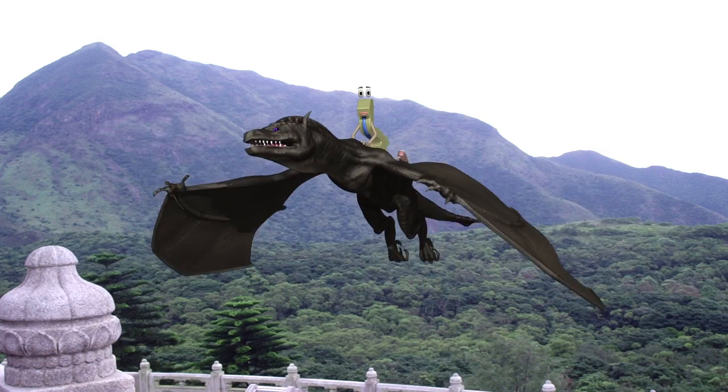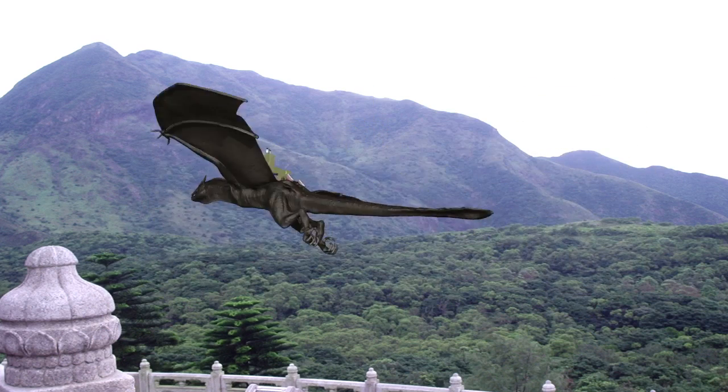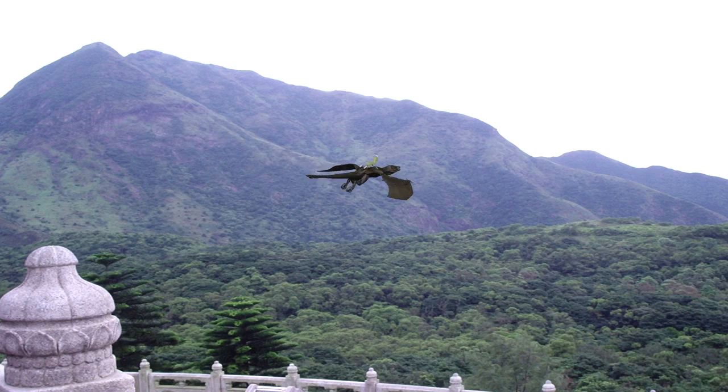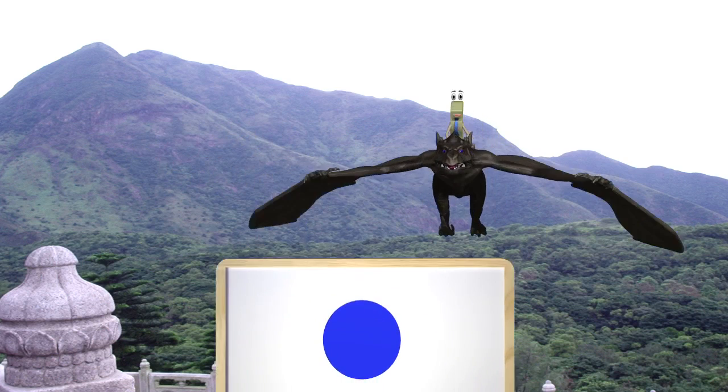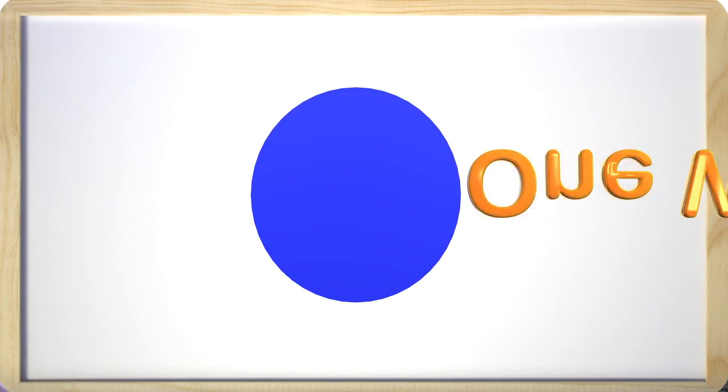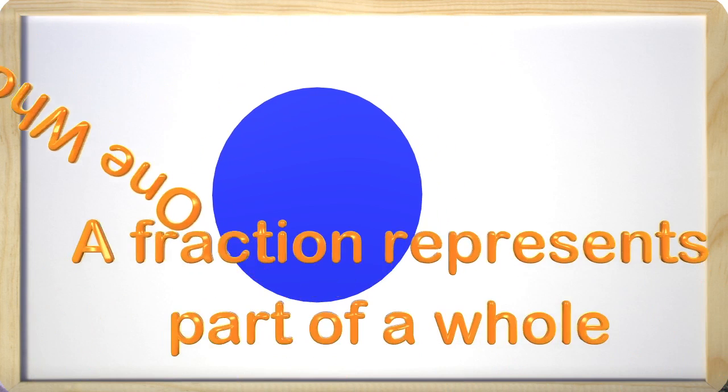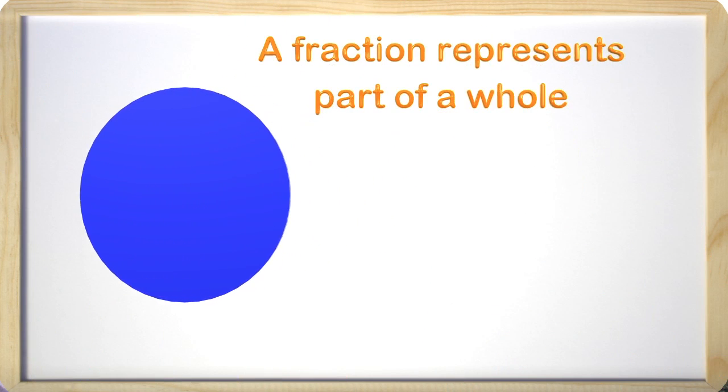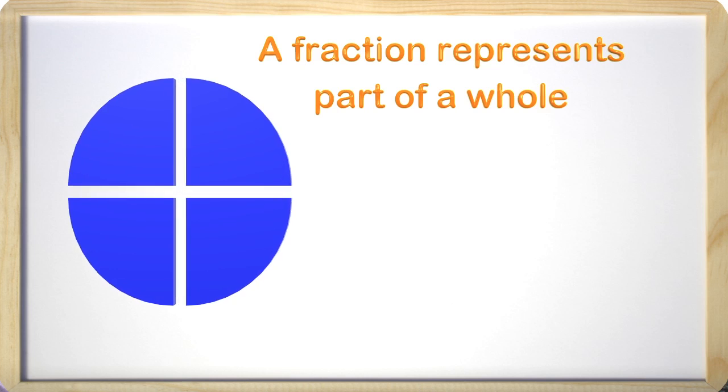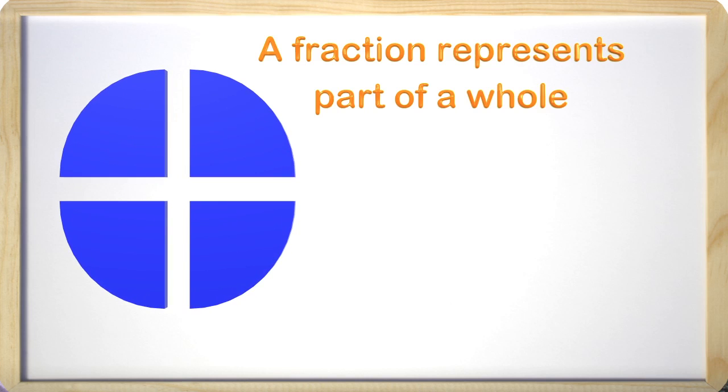Great, thank you for your help. Let's go learn about fractions. Here we have a circle and this represents one whole. We have one whole circle. A fraction represents parts of a whole, so if I divided this circle into four parts, each of these parts are a fraction of the whole circle.